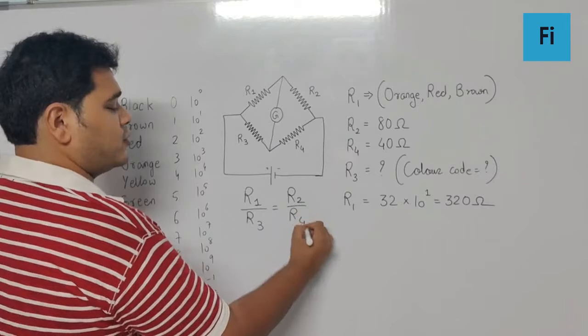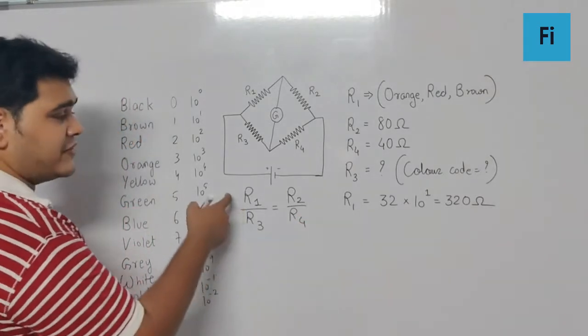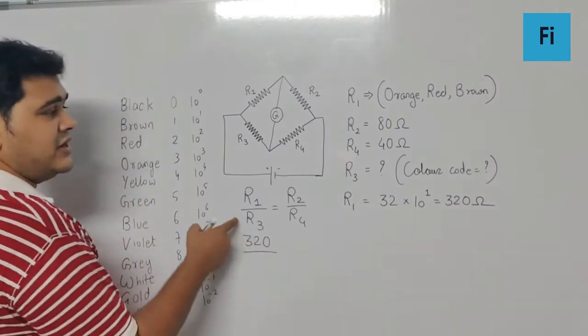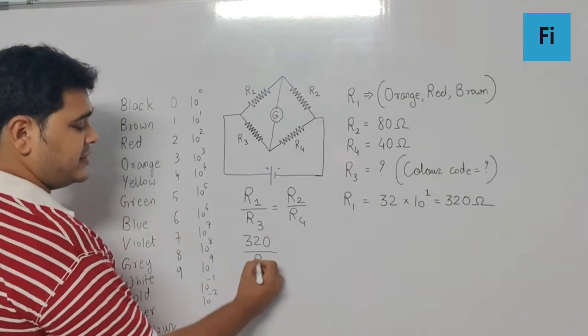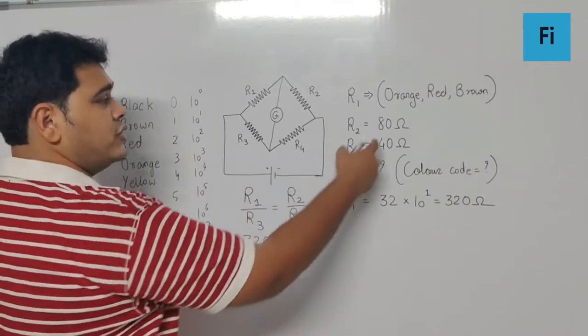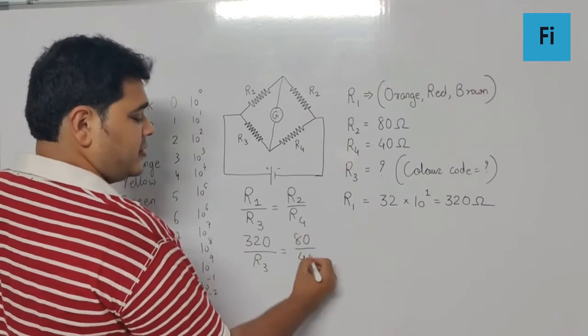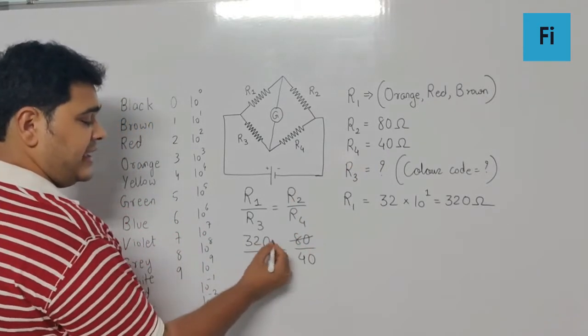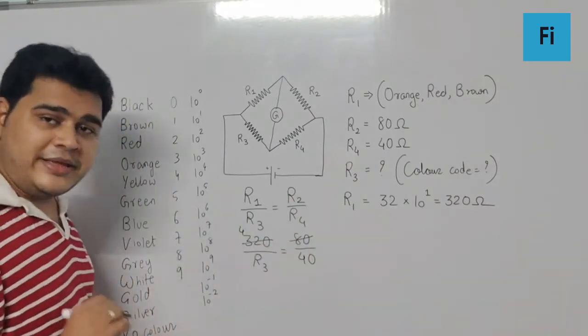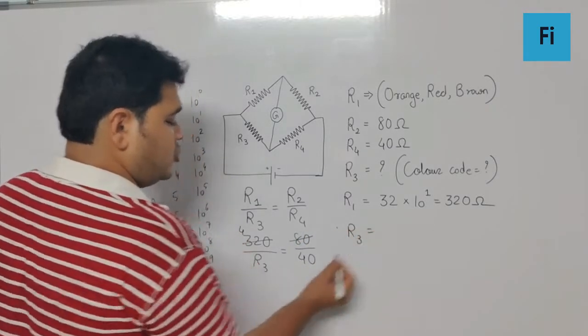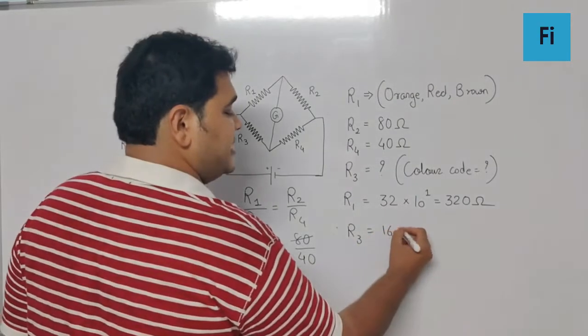So R1 we got as 320. R3 we are supposed to find. R2 is 80, and R4 is 40. So definitely 80 × 4 is 320, which means the value of R3 is going to be 160 ohm.